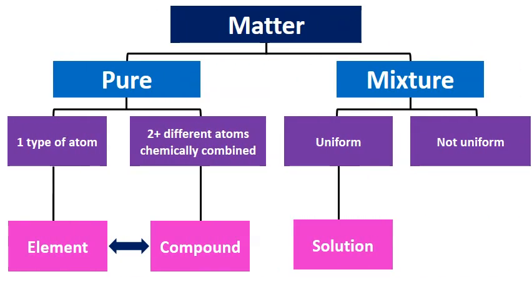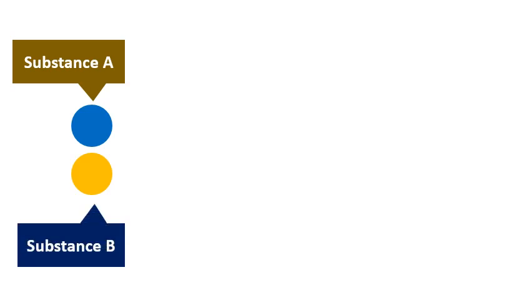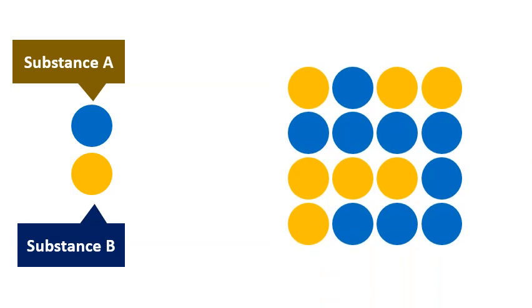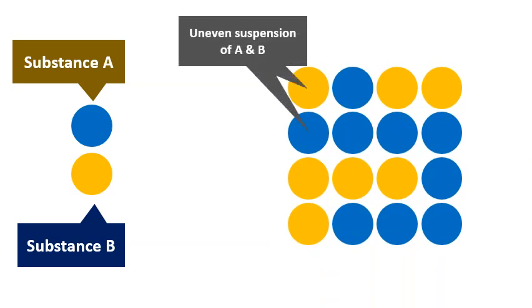We also have non-uniform or impure mixtures which we call suspensions. In a suspension, just like in a solution, we still have two or more things, substance A and substance B. They're both pure substances, but then we mix them together. Only in a suspension, they don't mix evenly. They kind of get clumpy, and typically if we take a suspension and leave it be, they will totally separate and settle out on their own.